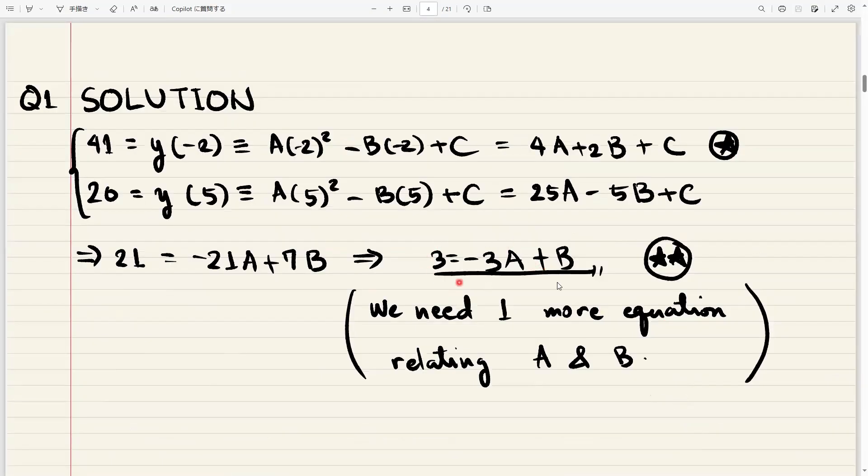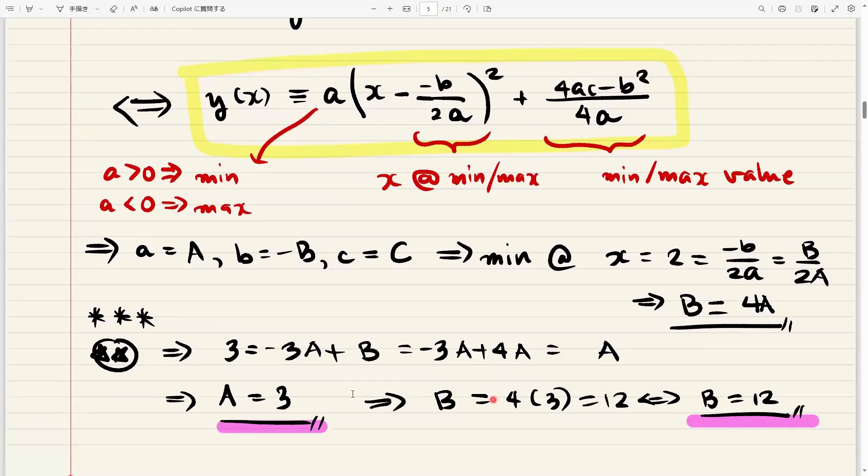And now we can go back here and replace this b here with four a. So we do that here. Three equals minus three a plus b. Replace this b with four a. And voila, we get a equals three. So we now have a value for a. And to get the value for b, we just have to replace the a here. So we already know that a here is three. Or actually, it will be easier to use this. They're going to give you the same results. But this one looks easier to use because you only multiply once. So four times three, four times three is 12. And so b is 12.